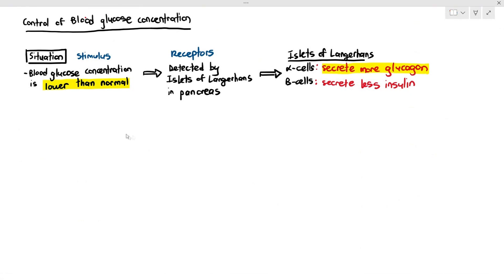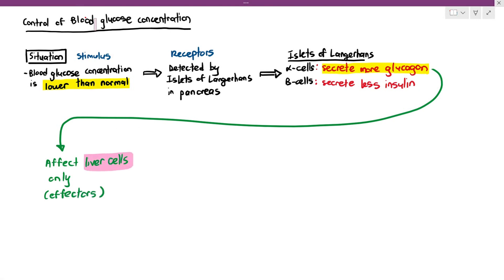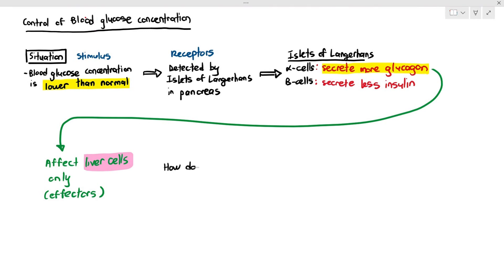When glucagon travels inside the blood towards the effector, it only affects the liver cells. Insulin can affect liver cells and skeletal muscle cells, but glucagon only affects the liver cells. So how does it affect the liver cells?